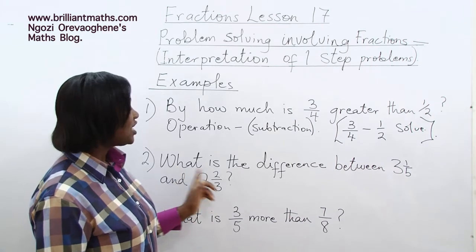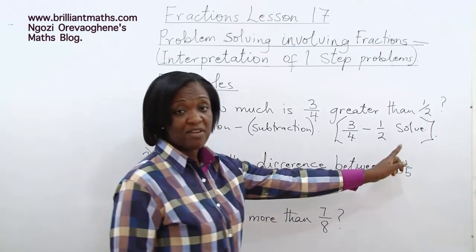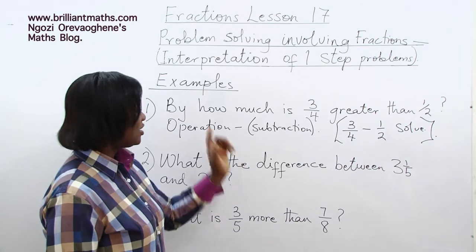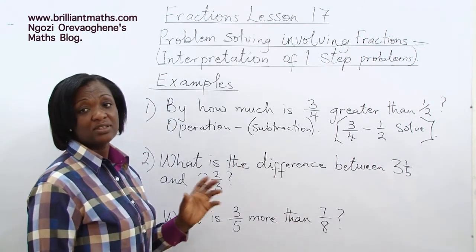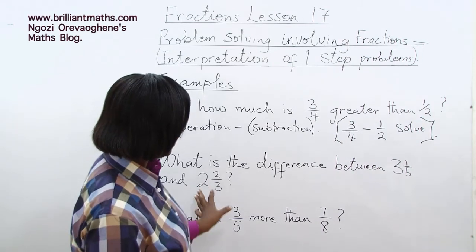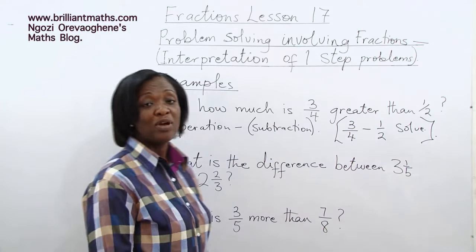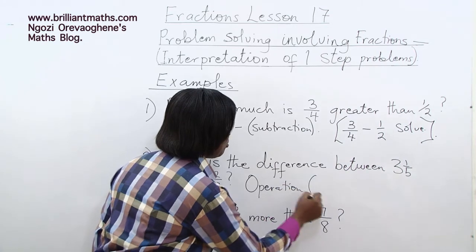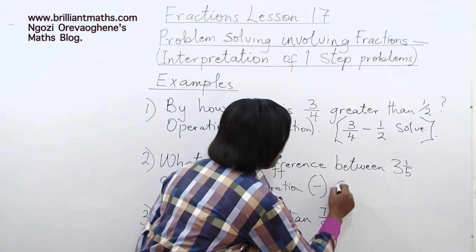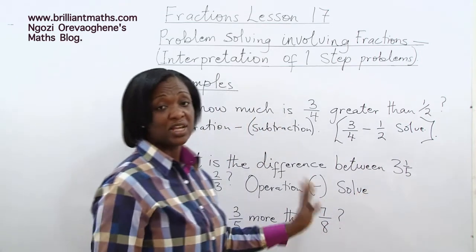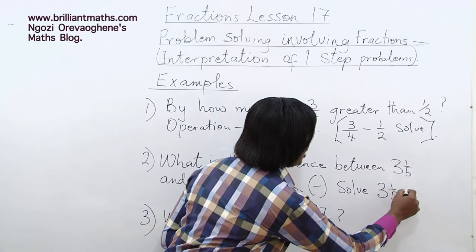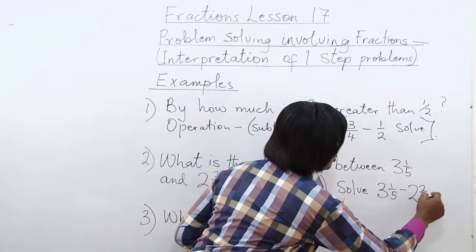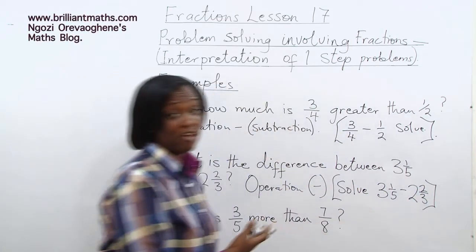Question two: What is the difference between three and one-fifth and two and two-thirds? The word 'difference' tells us the operation is subtraction. We're supposed to subtract two and two-thirds from three and one-fifth. Pause the video and solve three one-fifths minus two two-thirds. I'm very sure you'll get it correct.